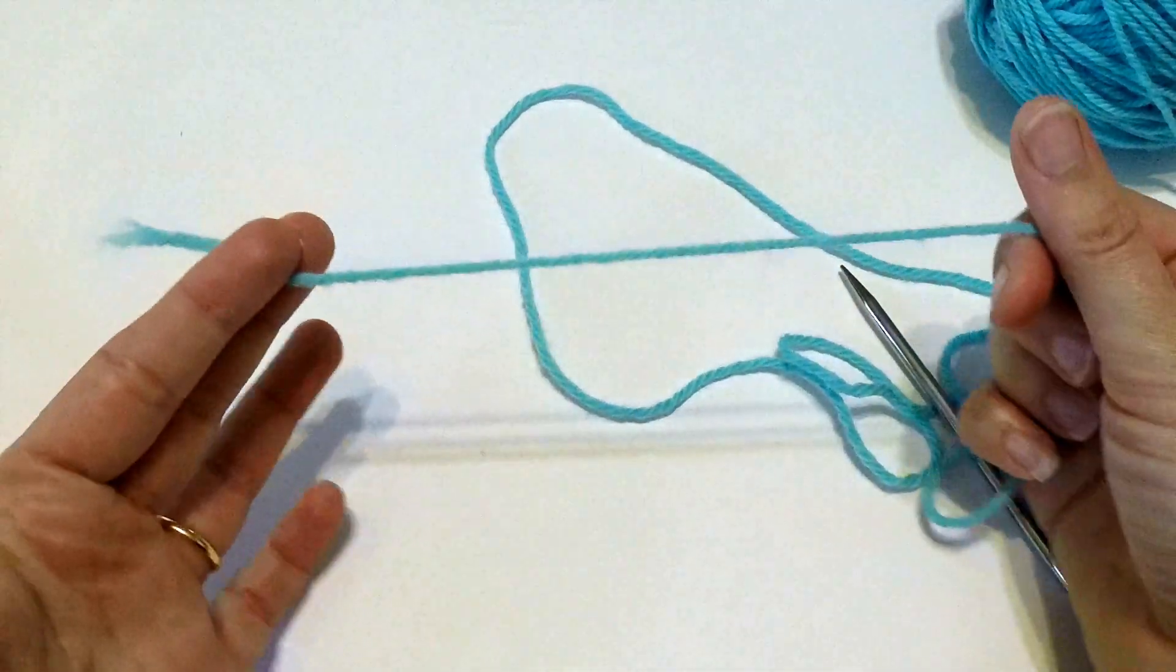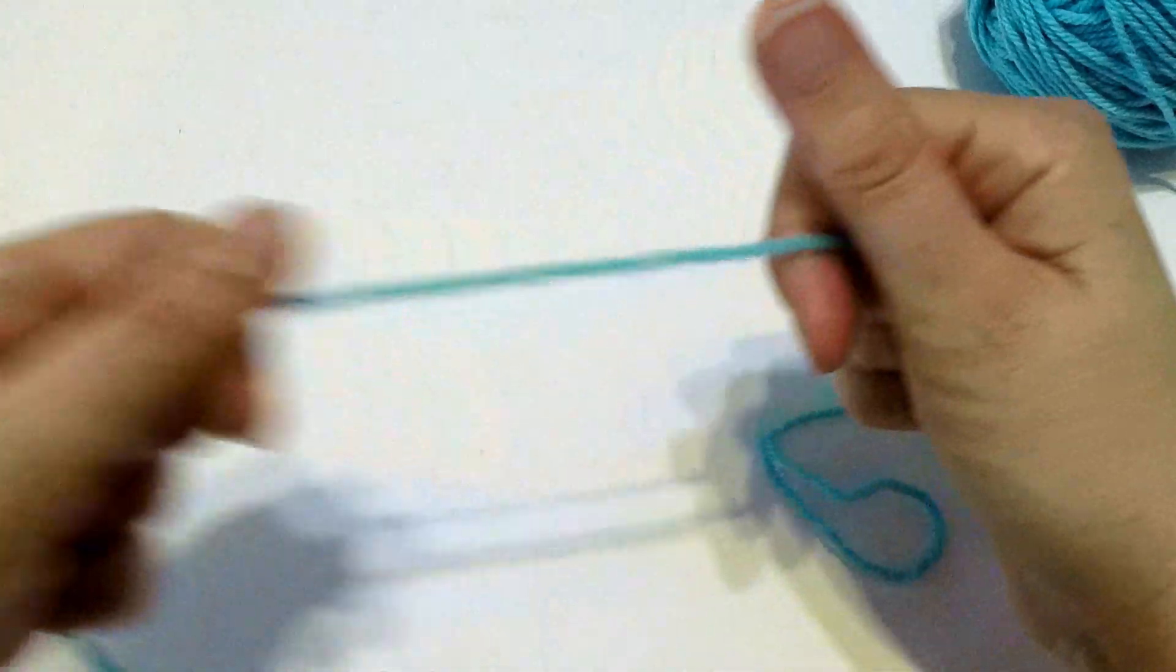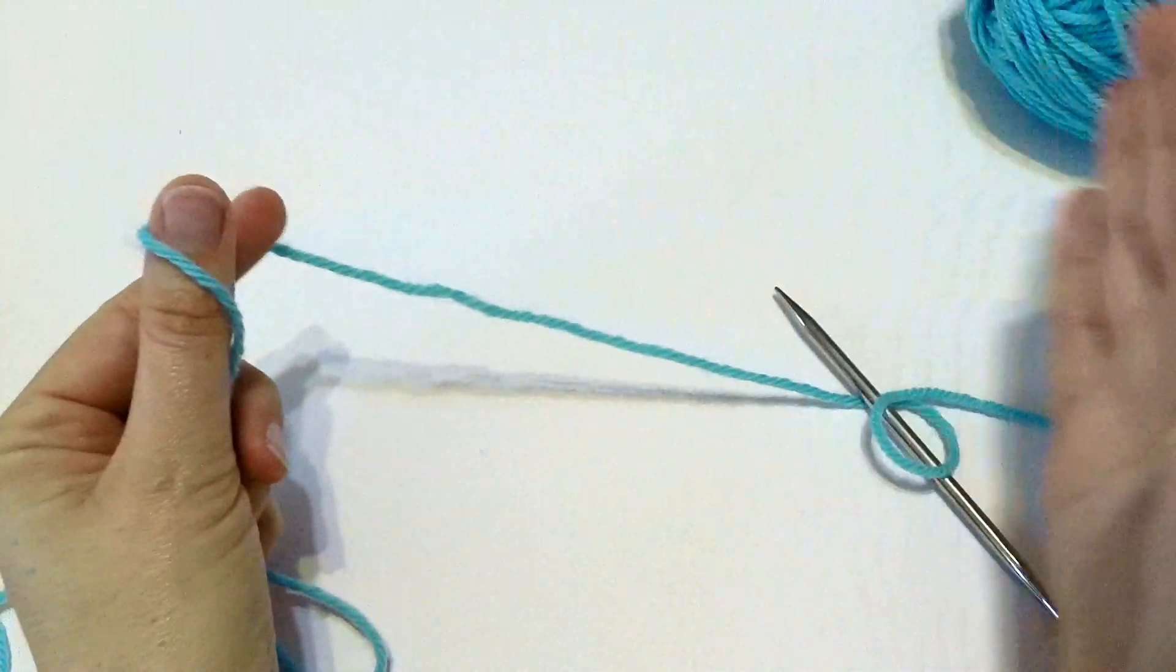So it's a long-tail cast-on, so you need a tail about three times the length of your intended cast-on edge width.